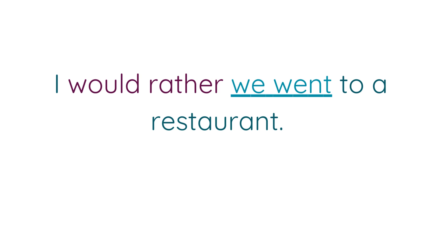So here there are two subjects: I, and we. When there are two different subjects, we have to use the V2 form of the verb. Now, 'would rather' can also be used to talk about the present. Would rather is used presently — I will talk about the sentences.